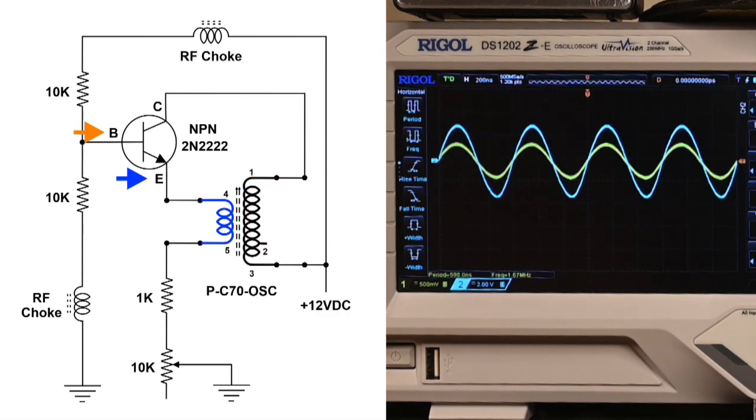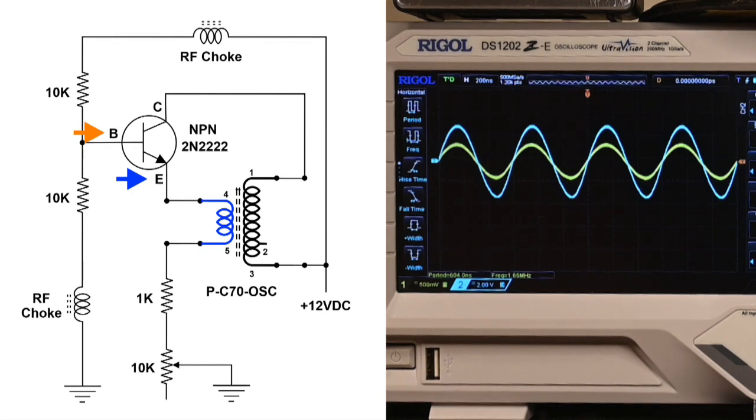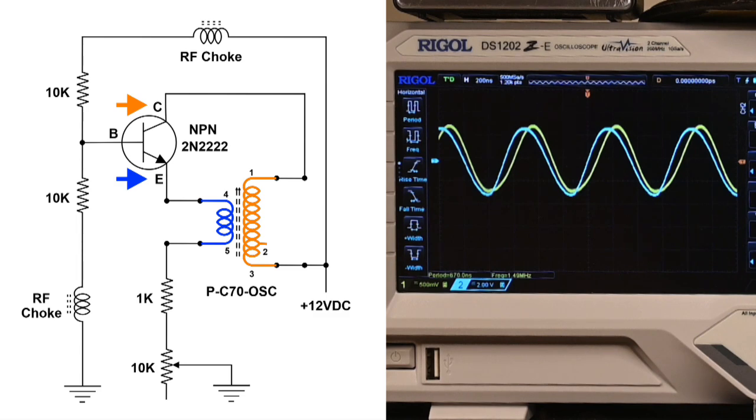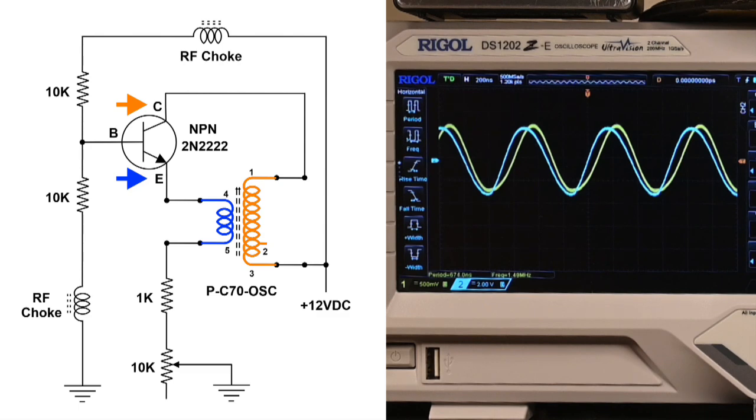There's the secondary. The base. I mean, excuse me. The base and emitter. This is the collector and emitter. So after looking at all this, I'm thinking that the secondary is magnetically coupled into the primary.